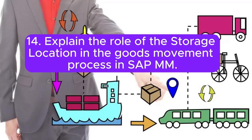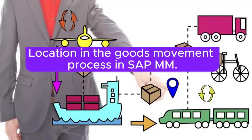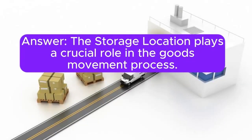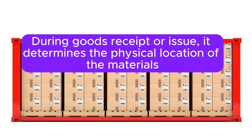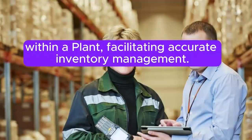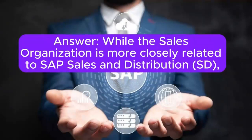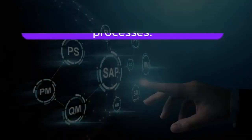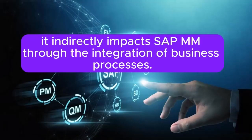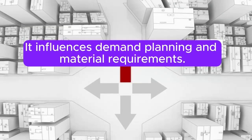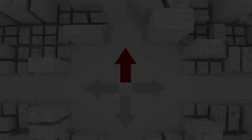Question 14: Explain the role of the storage location in the goods movement process in SAP MM. The storage location plays a crucial role in the goods movement process. During goods receipt or issue, it determines the physical location of the materials within a plant, facilitating accurate inventory management. Question 15: What is the relationship between the sales organization and the enterprise structure in SAP MM? While the sales organization is more closely related to SAP Sales and Distribution (SD), it indirectly impacts SAP MM through the integration of business processes. It influences demand, planning, and material requirements.